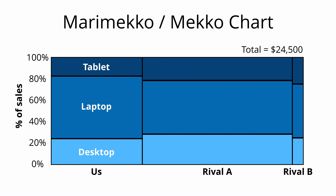For example, our sales of desktops are $2,000. Therefore, the size of our light blue desktop rectangle will be about 8%, or $2,000 divided by the total $24,500. Our sales were $8,500, rival A's sales were $14,000, and rival B's sales were $2,000. Rival A's sales are $14,000, which is more than half of the total $24,500, which is why the width of rival A's product segments is about 60% of the full rectangle. We can still make the same conclusions as the 100% stacked bar by seeing the proportion of sales each product accounts for by company.